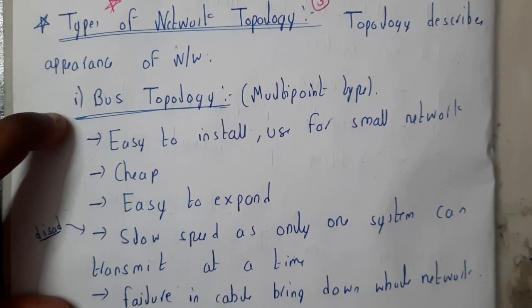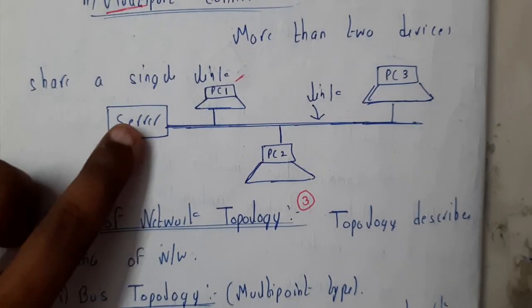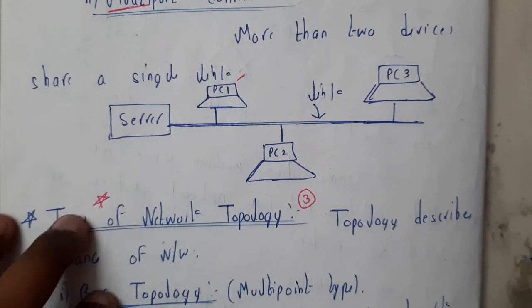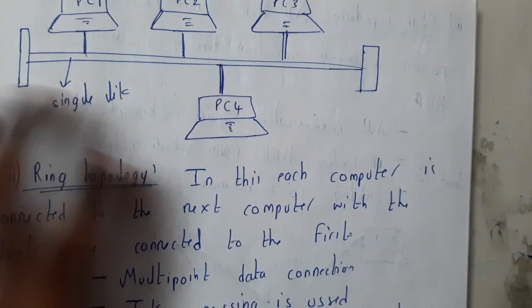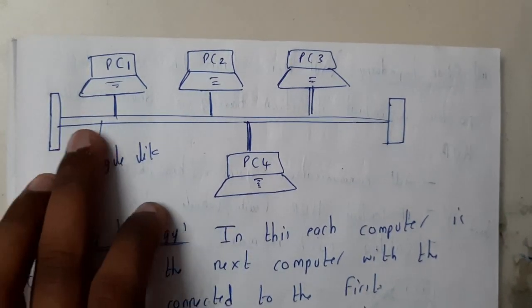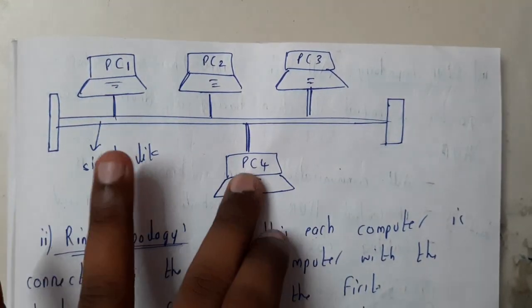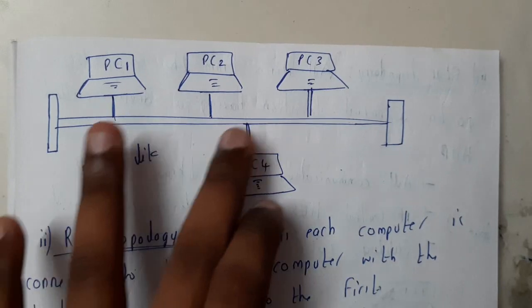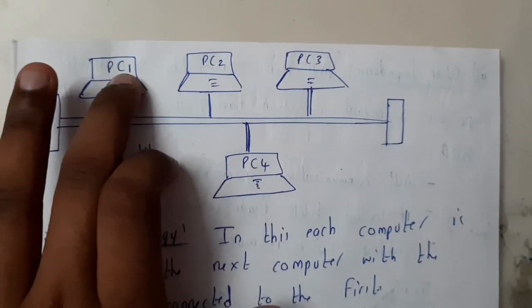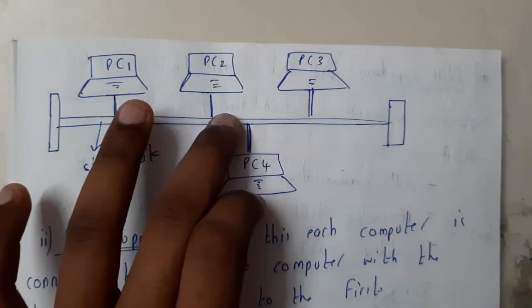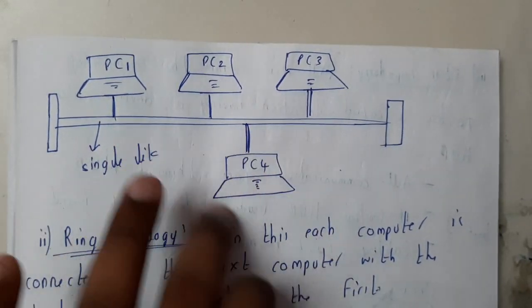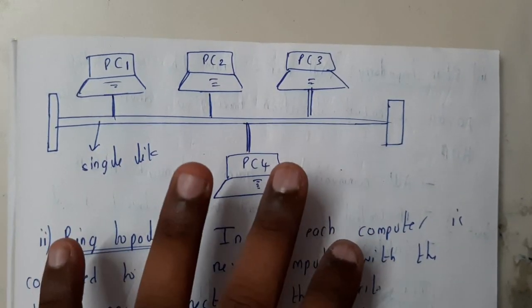The first type is bus topology. Bus topology is a multiport type, as we discussed in our previous lecture. Let us go through the diagram first so you'll have a clear idea. Here there will be a single dedicated path for all the devices. If one device is requesting data, that request will go through all the devices, and whichever accepts it will give the return data, which is then sent to all devices.